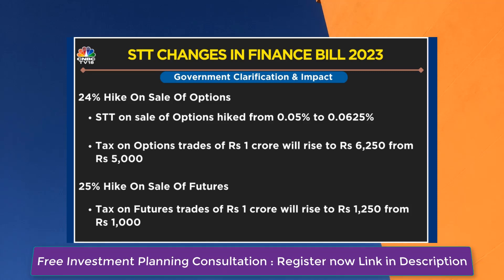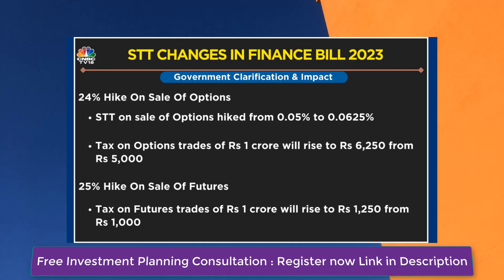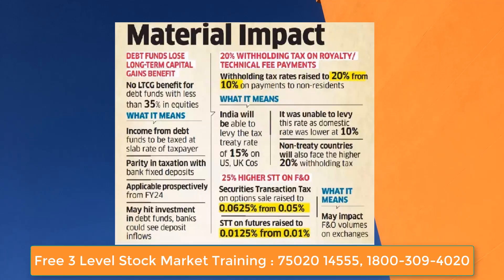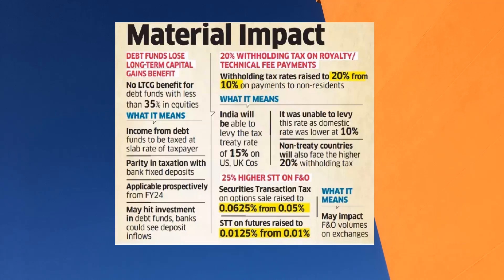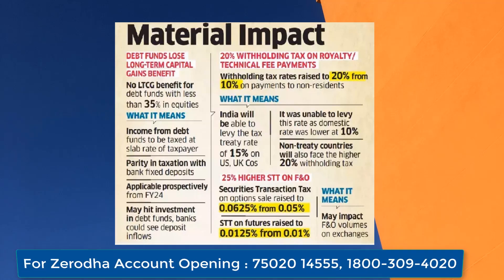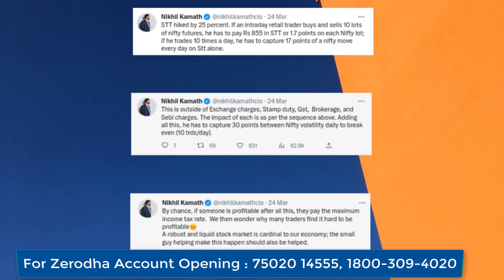Under the new rules, option sellers will have to pay ₹6,200 tax on a turnover of ₹1 crore, versus the earlier applicable levy of ₹5,000. Traders in the futures segment will now have to pay STT of ₹1,250 on ₹1 crore of turnover, against the earlier levy of ₹1,000. The new rules will come into effect from the new financial year 2023–24. In percentage terms, STT on sale of futures has been hiked from 0.01% to 0.0125%, and in case of options it has been hiked from 0.05% to 0.062%.